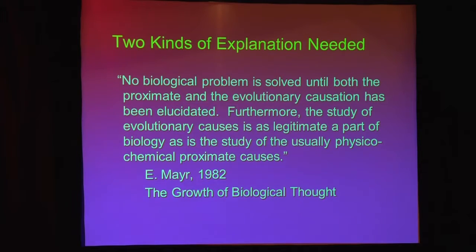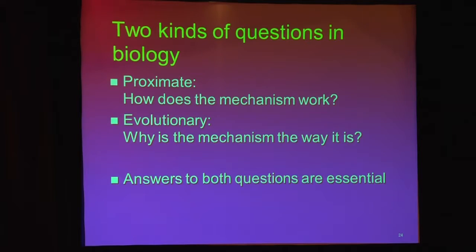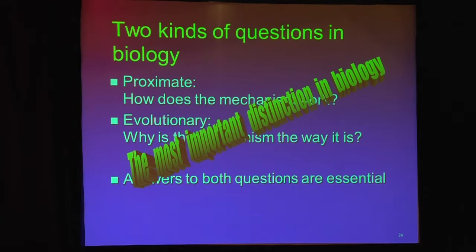So here's the big idea. There are two kinds of explanation we need for everything in biology: one about how things work, and another about how they got that way. Ernst Mayr, the great Harvard evolutionary biologist, says no biological problem is solved until both the proximate and the evolutionary causation has been elucidated. Furthermore, the study of evolutionary causes is as legitimate a part of biology as is the study of the usually physical and chemical proximate causes. So what kind of science did we all study in medical school? We studied proximate biology. We never, ever got to this whole other half of biology. Two questions — proximate: how does it work? And also, separate question, not an alternative: why is it that way?